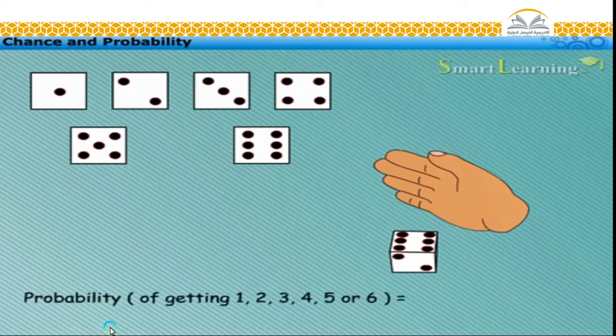Hence, the probability of each of the numbers one, two, three, four, five, or six is one upon six.